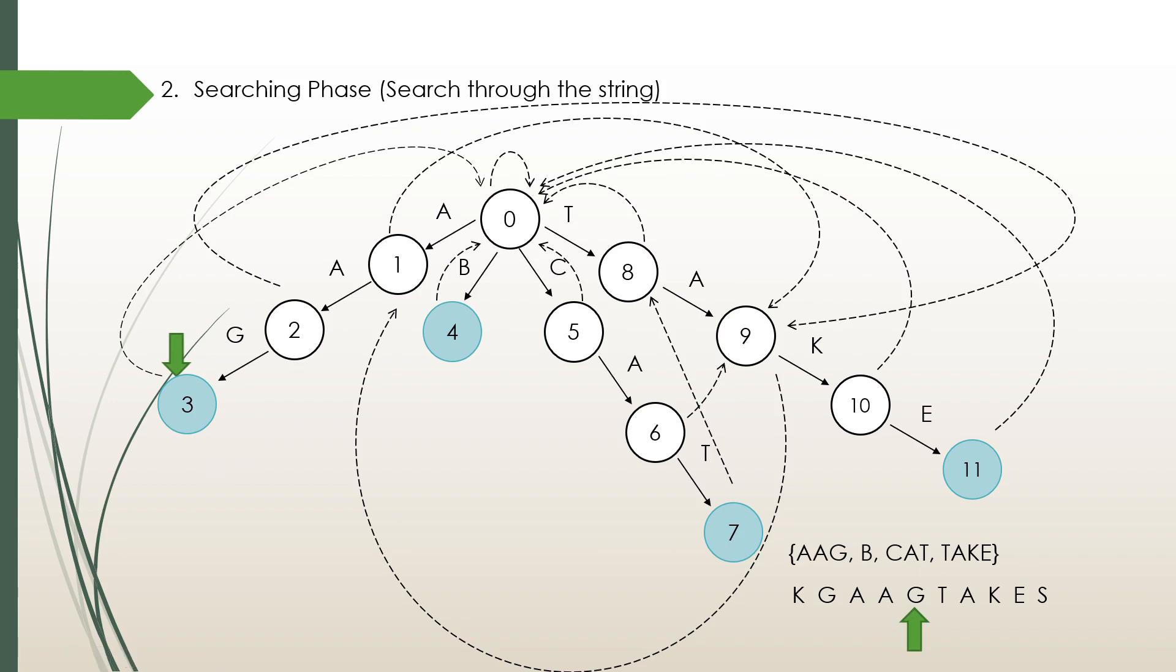We found AAG. I mark it here. After that we check for the next character T. Oh, what happened? There is no child for this node. In that kind of case we follow the failure link. The failure link of this node is going to the root. We are going to the root and check if there is a match. See, there is a T here. So, we move to that direction.